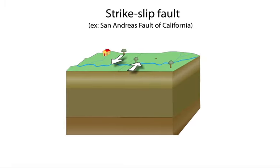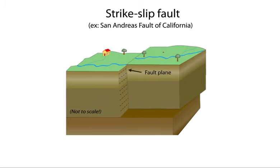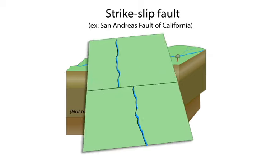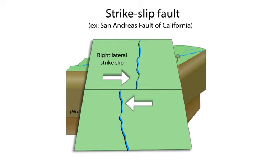A strike-slip fault is a near-vertical fracture where the ground has shifted parallel to Earth's surface due to horizontal shearing forces. If you stand on one side of the fault and the block opposite you shifts left, it is called a left-lateral fault. If it moves right, it's a right-lateral fault.